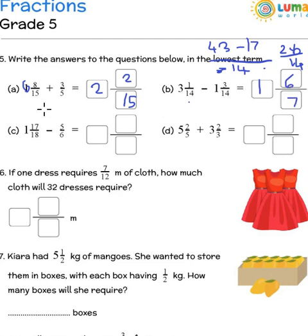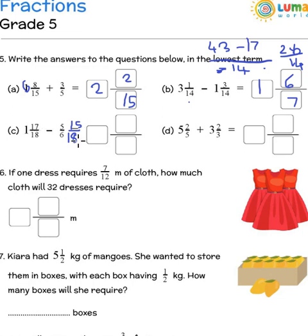The next one is 1 and 17 by 18 minus 5 by 6. Here you convert to like fractions by making the denominator 18. The numerator becomes 15 because you multiply by 3 — 6 threes are 18, 5 threes are 15. Now 17 by 18 minus 15 by 18 is 2 by 18, and I still have the whole number 1 there. So 1 and 2 by 18 — simplify to lowest terms: 2 is the common factor between 2 and 18.